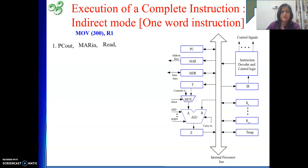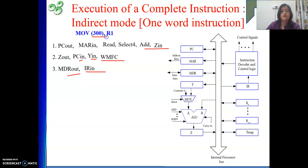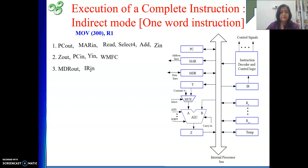To execute this instruction, first we need to fetch the instruction from memory. So: PC_out, MAR_in, Read, Select_4, Add, Z_in — this part increments the PC. Then the incremented value goes to PC as well as to the Y register. Then we need to wait for memory to complete its work — that is WMFC — and then MDR_out, IR_in. The instruction is now in the instruction register, which will also have the value 300 since my instruction is one word.